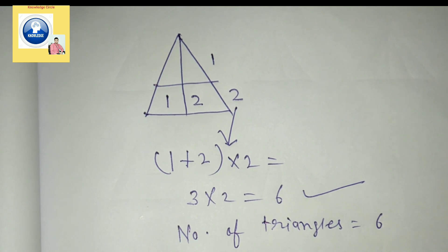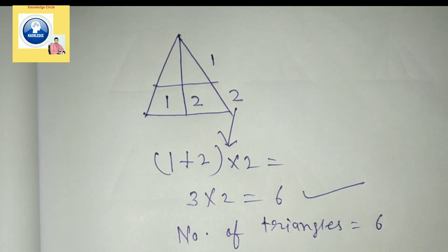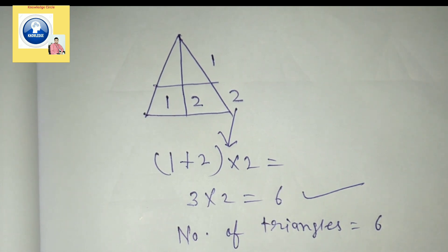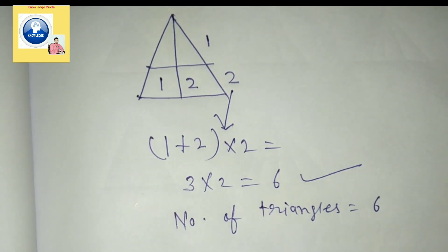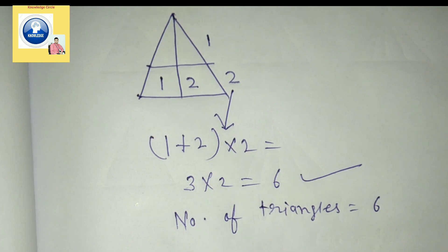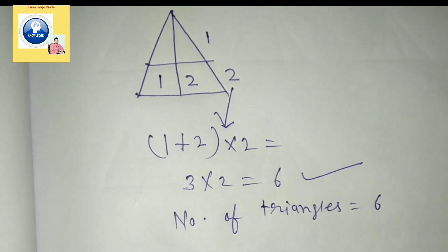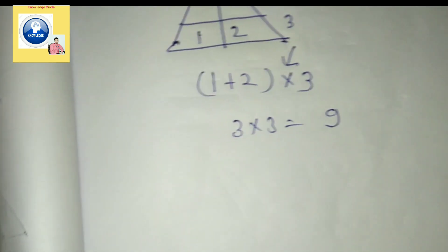Let's have another example to make the concept clear. Here the figure has two parts on one side — one and two — and three parts on the other side — one, two, and three. So you write one plus two, then multiply by three: three times three equals nine. So the number of triangles is nine.